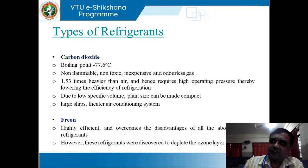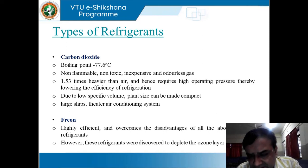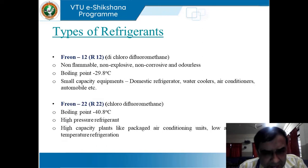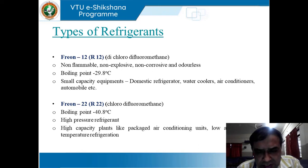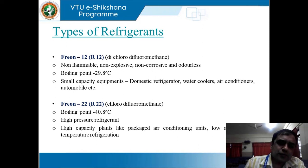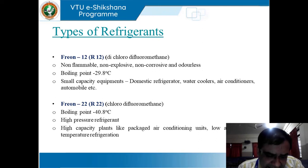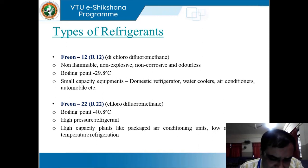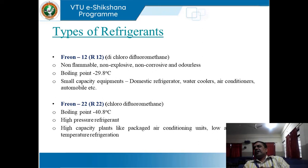Next comes Freon — one of the favorites for present-day researchers. Freon 12 and 22 are highly efficient and overcome the disadvantages of all above types of refrigerants. However, these refrigerants were discovered to deplete the ozone layer. Freon 12 has a boiling point of minus 29.8 degrees centigrade, and is non-flammable, non-explosive, non-corrosive, and odorless. Freon 22 has a boiling point of minus 40.8 degrees centigrade and is a high-pressure refrigerant, employed for high-capacity plants, packaging conditioning units, and low and medium temperature refrigeration.